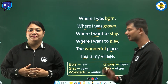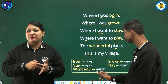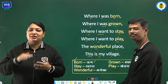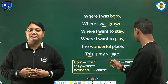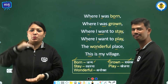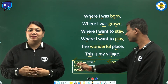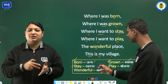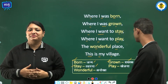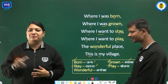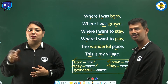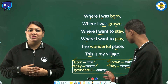Now let's see the word meaning. Born — born means Jan. Grown — grown means Vayask. Stay — stay means Tahrna. Play — play means Khelna. Wonderful — wonderful means Anokha.